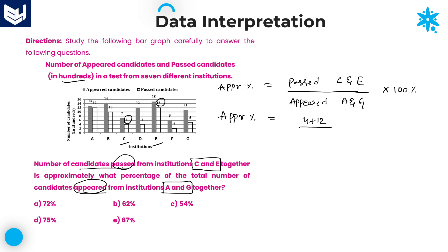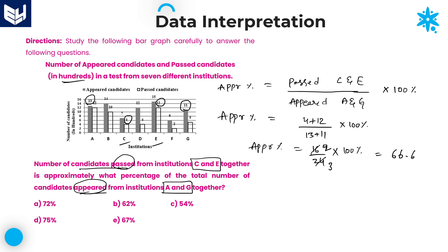Appeared candidates from A and G: A is 1300, G is 1100, so 13 + 11 = 24. The calculation is 16 divided by 24 into 100%. Cancelling with 8: 2/3 × 100 = 66.66%, which is approximately equal to 67%. The required approximate percentage is 67%. Option E is the right answer for this question.